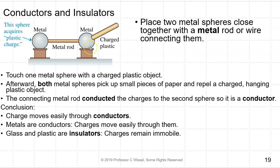We're going to do the same thing as we did a minute ago, but now we're going to replace the plastic wire with a metal wire, different material. Again, we touch one metal sphere with a charged plastic object. Afterward, both spheres will pick up small pieces of paper and repel a charged hanging plastic object. This means the connecting metal sphere conducted the charges to the second sphere, so the metal is a conductor. The conclusion: charge moves easily through conductors. That's the second type of material. Metals are conductors. Charges move easily through them. Glass and plastic are the other kind of material called insulators, and in them the charges remain immobile.